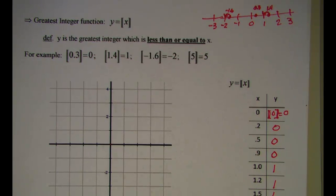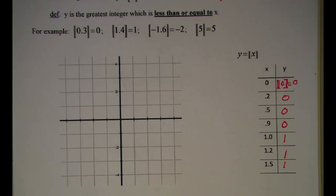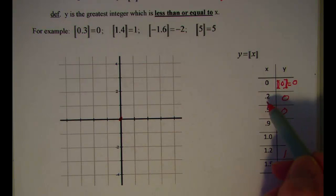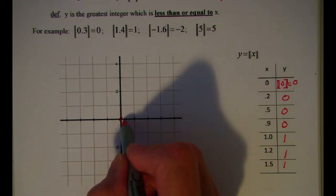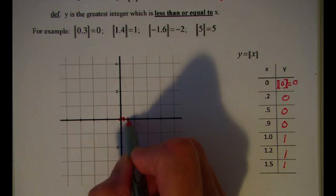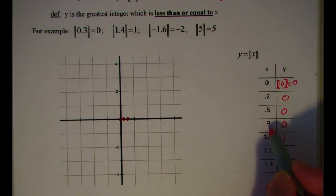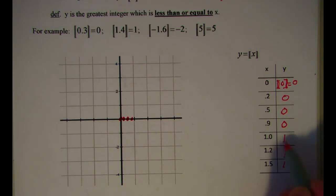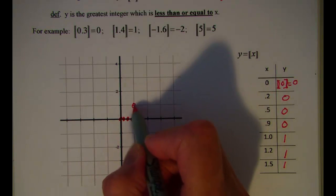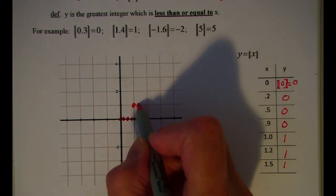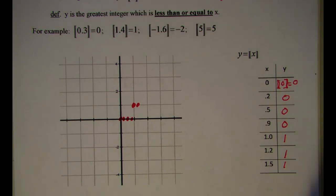Now let's look at the graph of these values. When x is 0, y is 0. When x is 0.2, y is 0. When x is 0.5, y is 0. When x is 0.9, y is 0. But then when x is 1, y is 1. When x is 1.2, y is 1. When x is 1.5, y is 1.